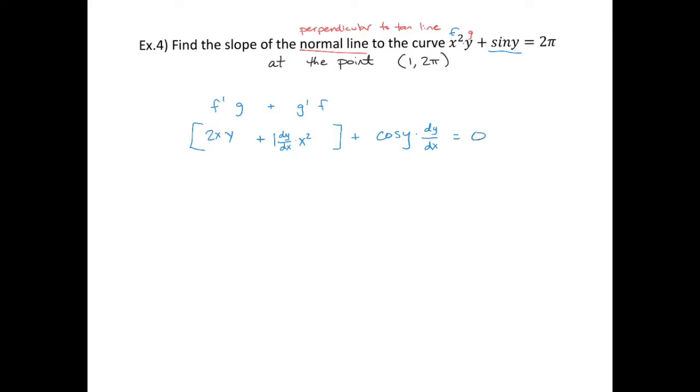The derivative of 2π is 0. So what we have here is 2xy + x²dy/dx + cos Y dy/dx = 0. Let's solve for dy/dx. That starts with moving the 2xy to the other side where it becomes negative 2xy.